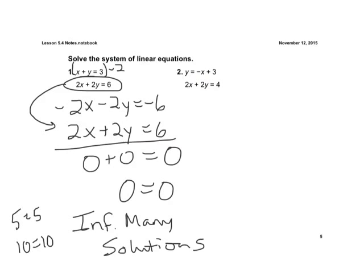Alright, let's look at number 2. You can also solve these by substitution. I would probably pick substitution here because y is already by itself. Our variables aren't lined up, so elimination wouldn't be very easy. They're not both in slope-intercept form, so we probably wouldn't graph them.